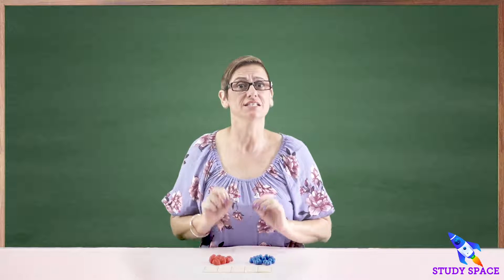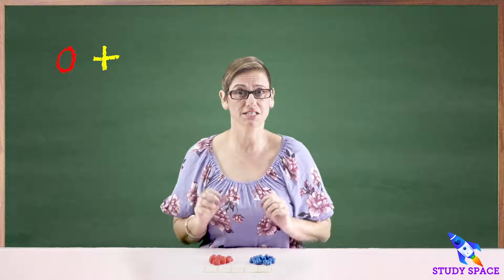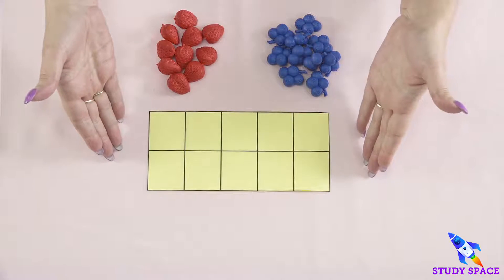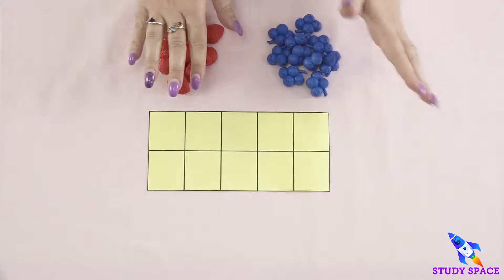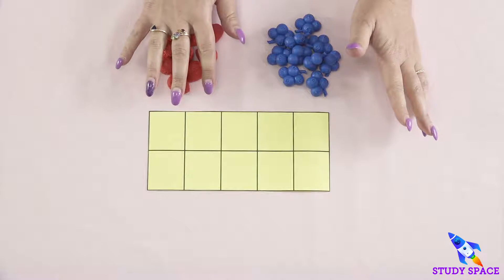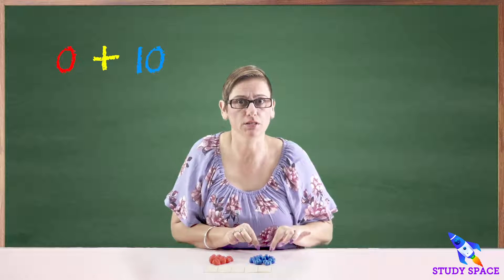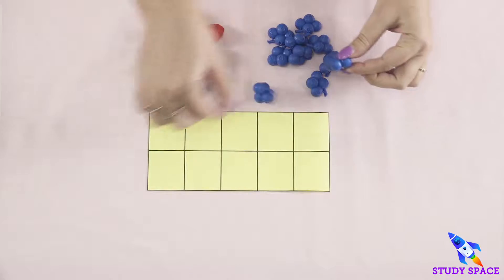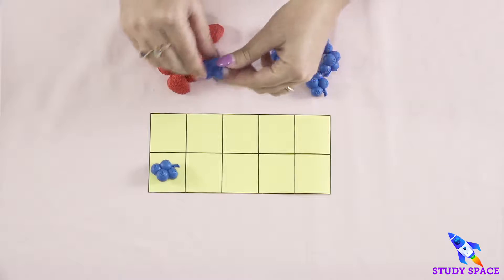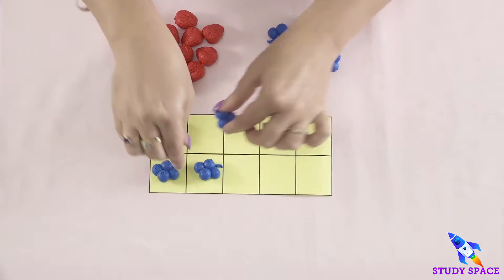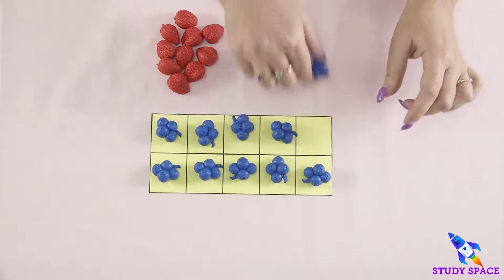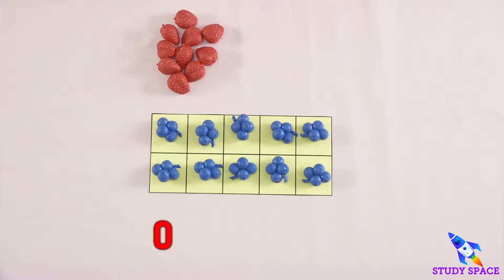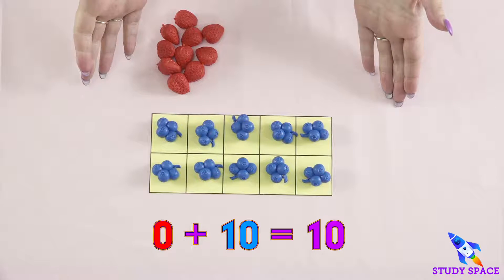Let's start with zero plus ten. I start with zero on my ten frame, so I don't need any strawberries because that's the zero number, but I need ten blueberries. So zero plus ten is one set of friends of ten.